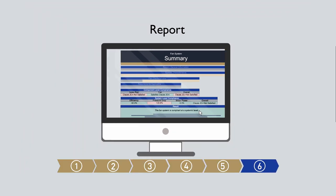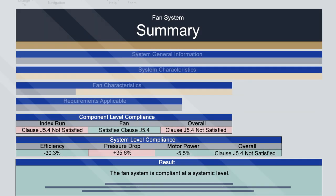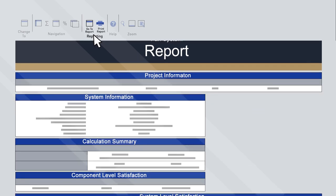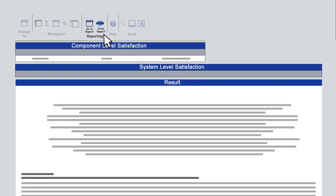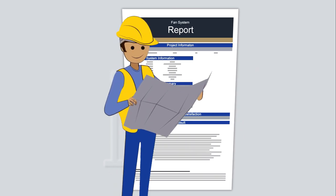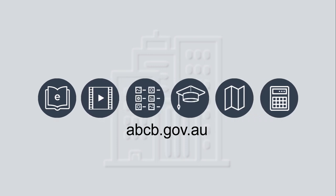Step 6: report the results. The calculator can generate a report summarising the results. On the ribbon, click Go to Report to view it, or Print Report to print it. Remember, this information needs to be checked and verified against the design documentation for compliance assessment. Further details about the fan system calculator, including additional examples, are provided in the Energy Efficiency Volume 1 Handbook and other resources from the ABCB website.